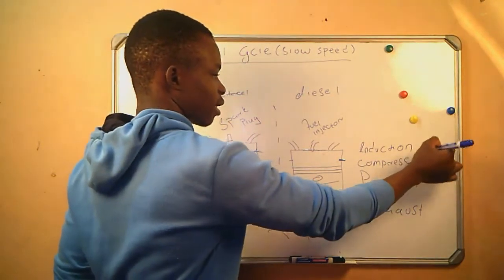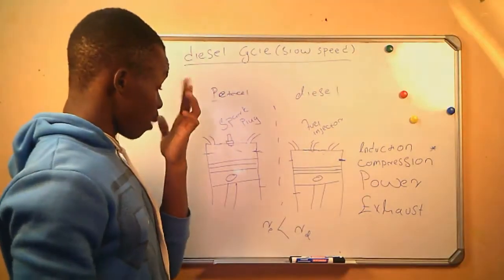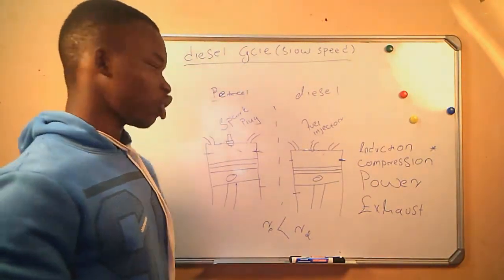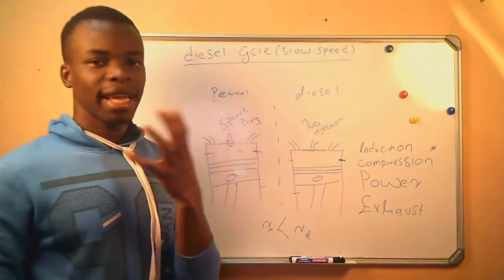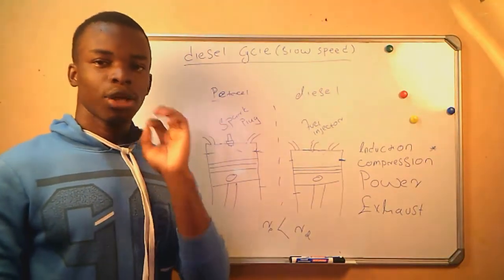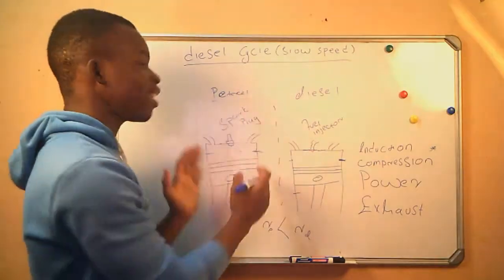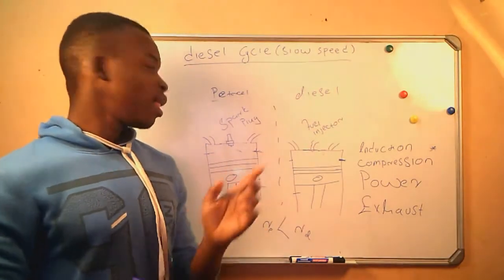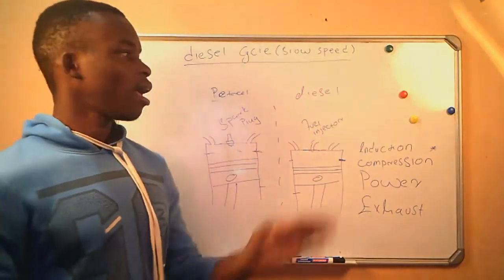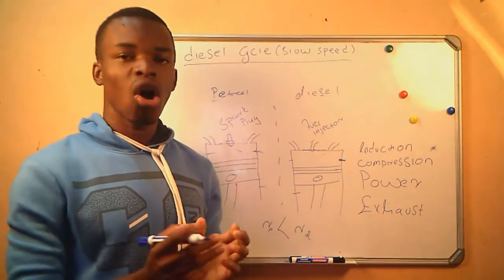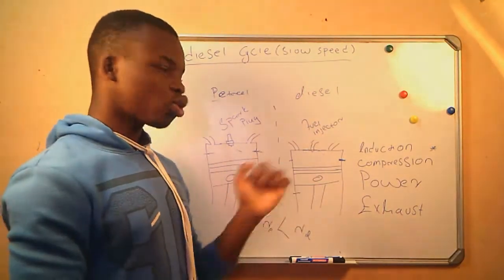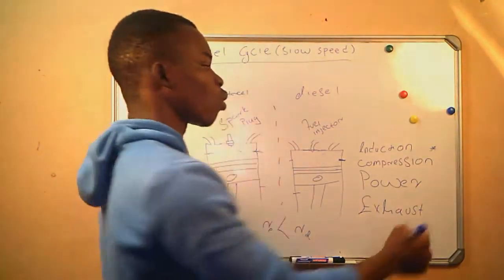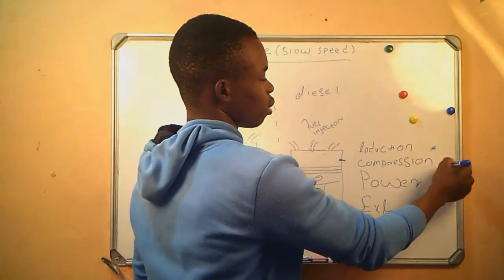Now we start with our combustion strokes. First, it's the induction stroke. The piston is moving from the top dead center to the bottom dead center. On the petrol engine, a fuel mixture is introduced into the combustion chamber. And on the diesel engine, only air is introduced into the combustion chamber.